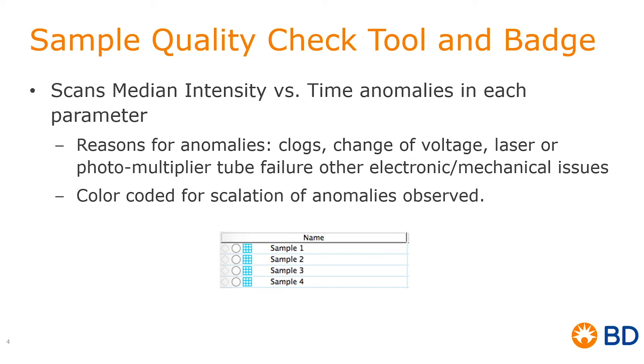or photo multiplier tube failure as well as other electronic or mechanical issues. We have color-coded the different levels of anomalies observed, and these go from best to worst in blue, green, purple, and red.